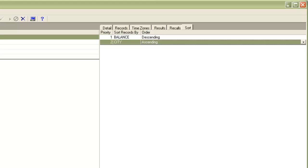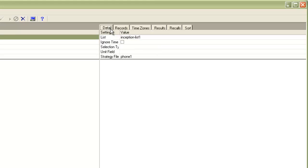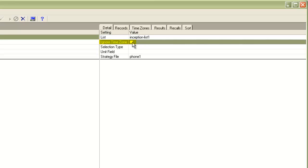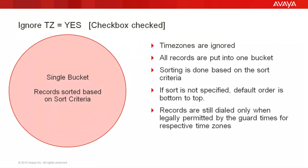Now let's see how it works together with the ignore timezone setting. On the details tab of your selection, you would see this ignore timezone setting with a checkbox. It's worth mentioning that turning on or off the ignore timezone setting does not impact the dialer making calls to records outside of the legally permissible guard times. When this setting is checked — that is, you are ignoring the timezones — all the selected records are put into one single bucket. Basically, you are telling the system not to follow the order of the timezones. The records are simply put in one common bucket and sorted based on the sort field that you specified in the selection. If no sort is specified, the default order, that is bottom to top, is followed.